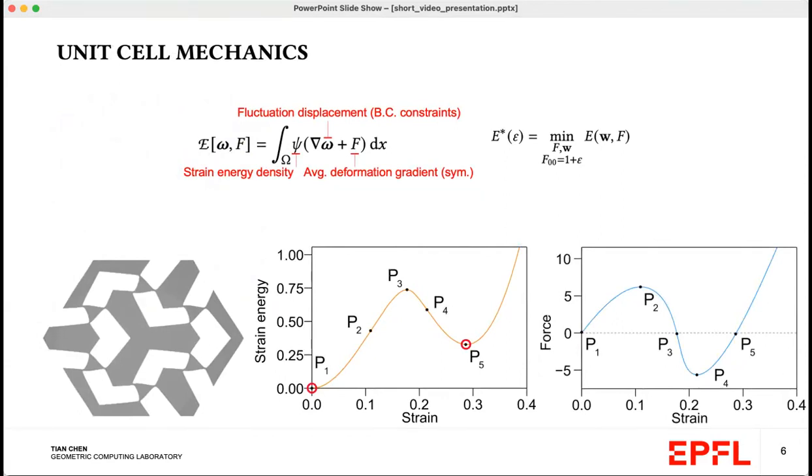There are two criteria we can arrive at for choosing the best unit cell. The first is to maximize bistability. The second is to maximize the stiffness at the second equilibrium state. This provides us the flexibility to choose the appropriate unit cell depending on the specific application. Though in our experiments, we always selected the cell with the highest stiffness.